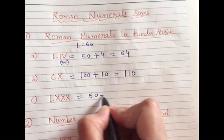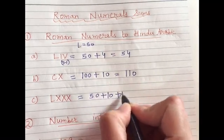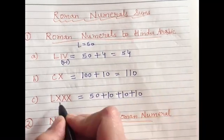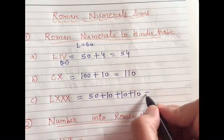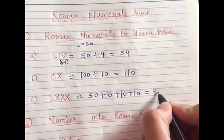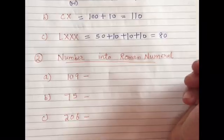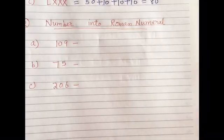L is 50 then 10, 10 and 10, X X X. So it will be 50, 60, 70, 80. You will have to add them all fine.